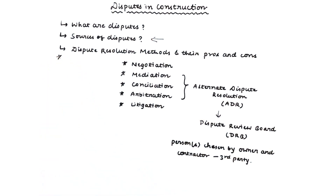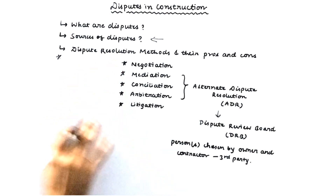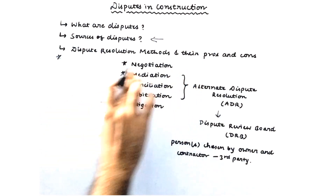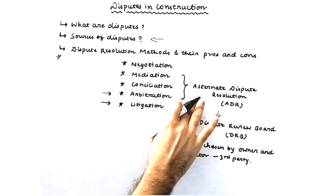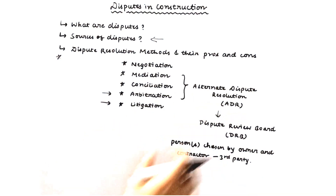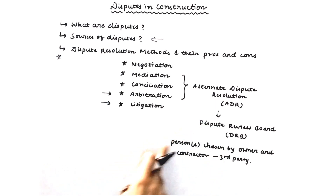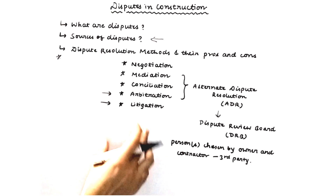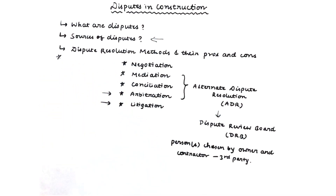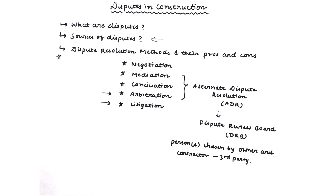This topic is extremely important if you want to become a contracts administrator, whether at site level or head office level. You should know about these methods, especially arbitration and litigation. Mediation, conciliation, and arbitration are called alternate dispute resolution methods — ADR — because they involve a dispute review board (DRB), which might consist of a single person or a panel of three or five people, always an odd number. This board is chosen by the owner and contractor together and is called a third-party board.